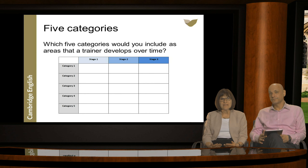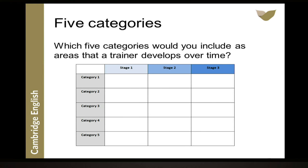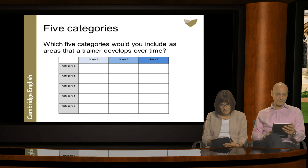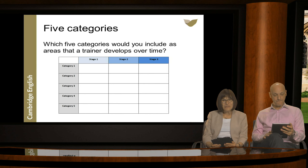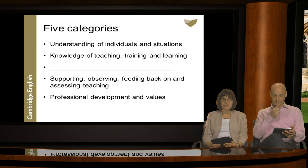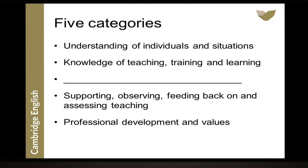Thinking about trainers' skills and competencies, which categories would you include as general areas that trainers need to develop over time? You've suggested management skills, being innovative, professional development, observation, knowing your methodology, giving feedback and counselling, and reflection. Following consultation and discussion with many trainers and expert consultants around the world, here are four of the five categories in the Trainer Framework. What do you think the missing one is? Type your suggestions in the chat box.